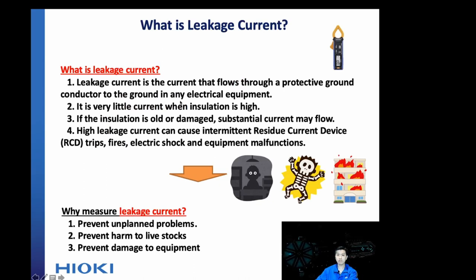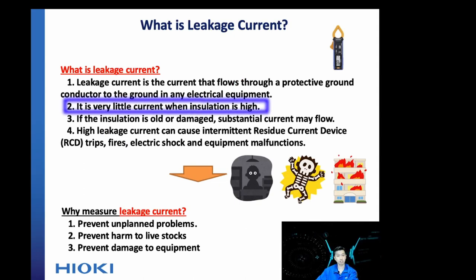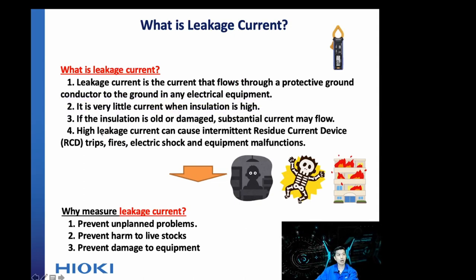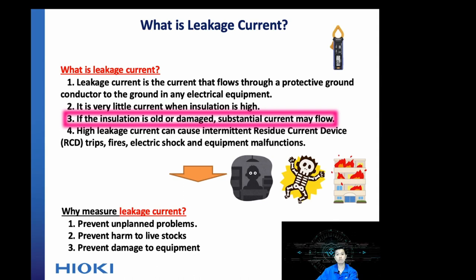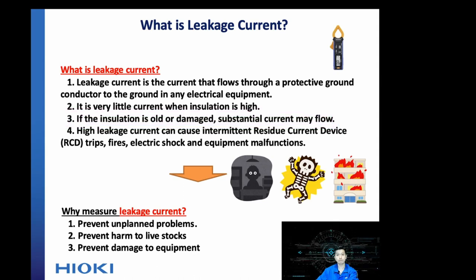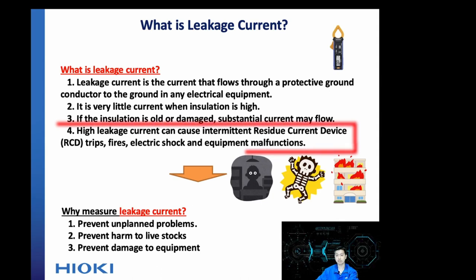Now, the second cause of leakage current: if the insulation of the cable is high, then there will be very small leakage current. However, if the insulation is weak or damaged, substantial leakage current may flow. Ultimately, this high leakage current may cause intermittent tripping on the residual current devices.